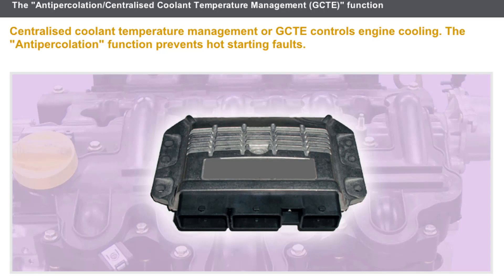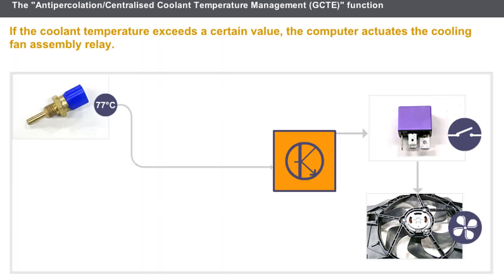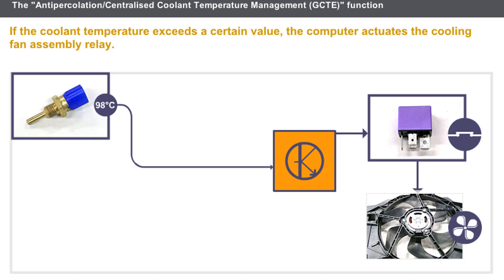Centralized coolant temperature management (GCTE) controls engine cooling. The anti-percolation function prevents hot starting faults. These functions use the following components: the coolant temperature sensor and the cooling fan assembly relay. While the engine is running, the injection computer analyzes the coolant temperature. If this temperature exceeds a certain value, the computer actuates the cooling fan assembly relay. As soon as the temperature falls back below a certain value, the injection computer stops the cooling fan assembly.